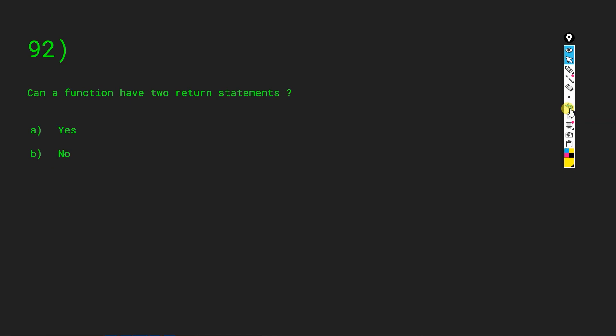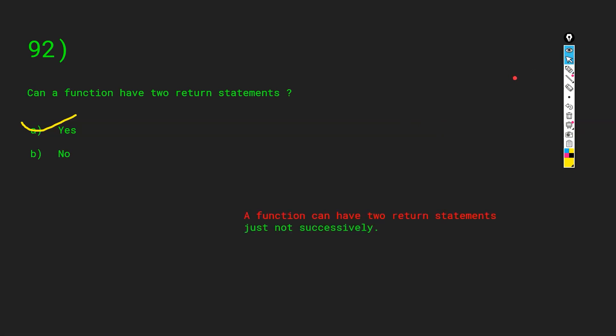Can a function have two return statements? When we write a return statement, the compiler exits the block. For example, if there are two return statements — one returning 'hello' and one returning 'bye' — once 'hello' is returned, the compiler exits and the second return is ignored. It won't throw an error, so yes, a function can have two return statements, but the second one will never execute.